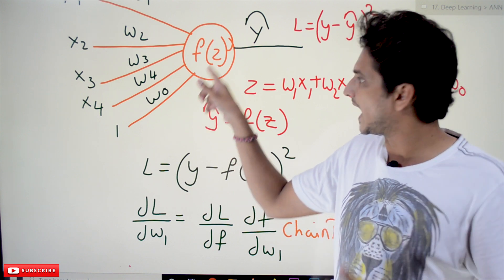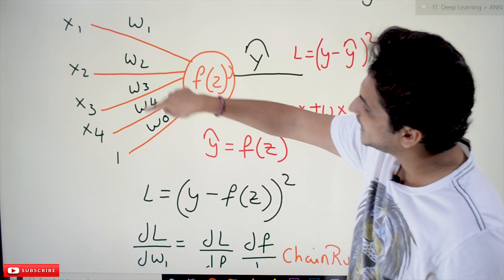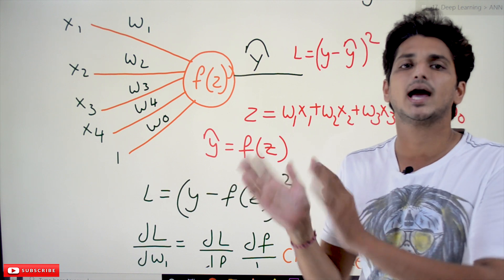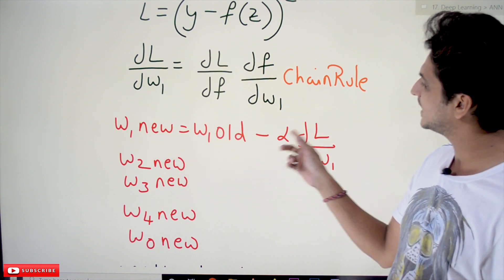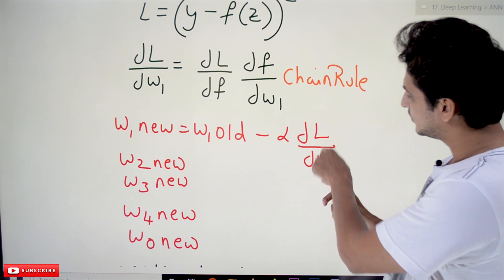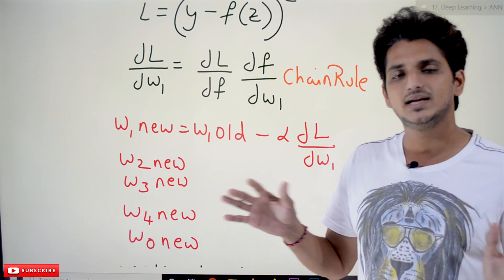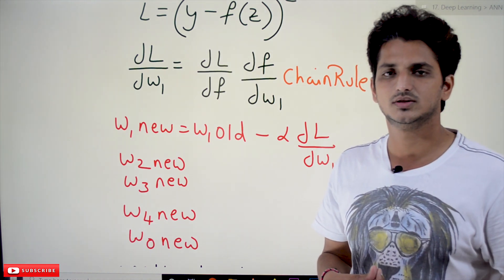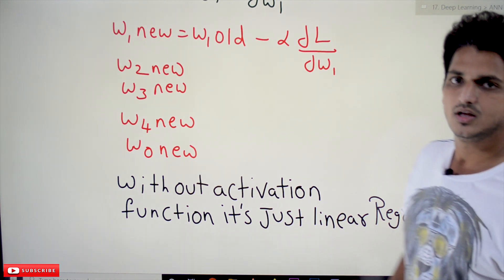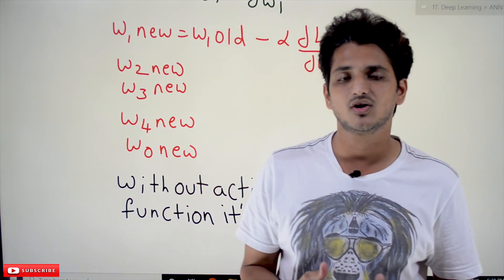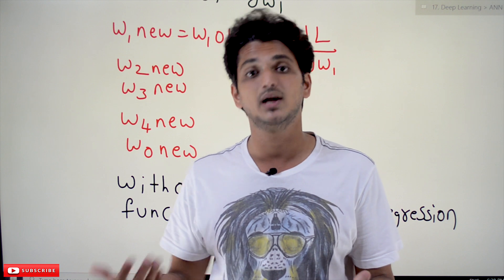How we get non-linearity with the activation function will be understood in our next classes, where we will make a separate video on the benefits of the activation function. So, training the model and updating the w values — we call this back propagation, using SGD: w1_new = w1_old − α * (∂L/∂w1), using the chain rule equation for ∂L/∂w1. That is the only difference between single perceptron and multiple linear regression. Without activation function, it is just linear regression. In our next class, we discuss multi-layer perceptron and how to train it.